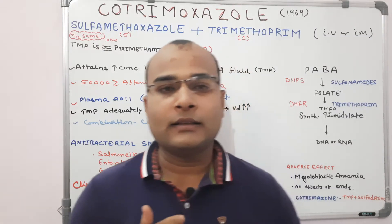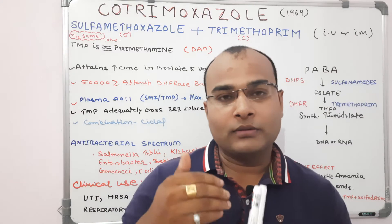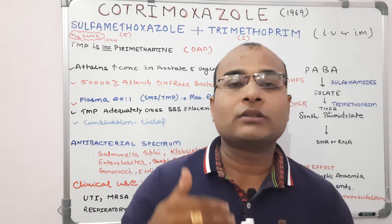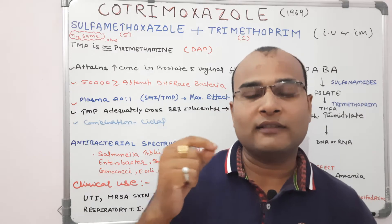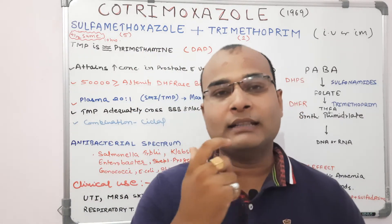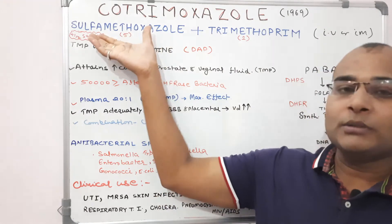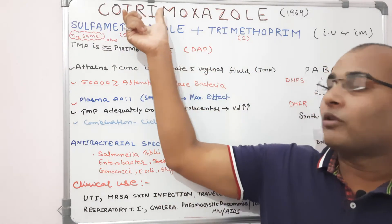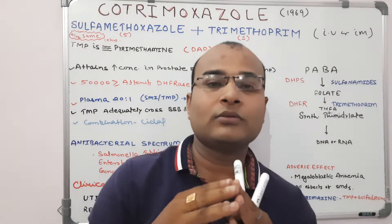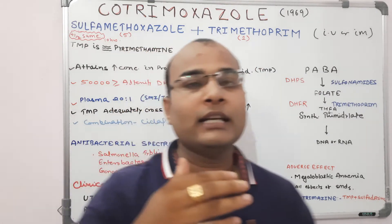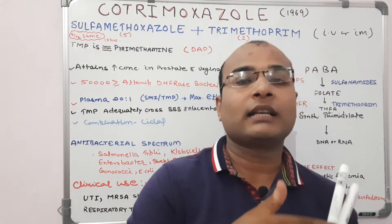In today's video lecture we will talk about the antibiotic drug Cotrimoxazole. As we have discussed Sulphonamide, after Sulphonamide we are taking up Cotrimoxazole for discussion, because Cotrimoxazole is a combination of two drugs: one is a Sulphonamide derivative which is Sulfamethoxazole, and the other component is Trimethoprim. Sulfamethoxazole is a Sulphonamide derivative which we have already discussed in detail.